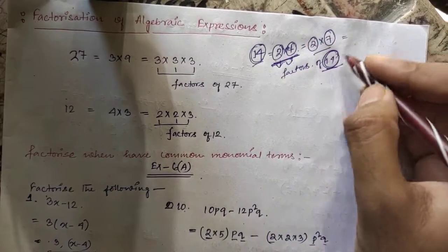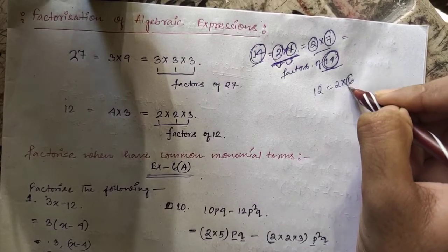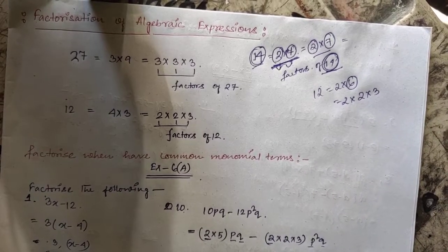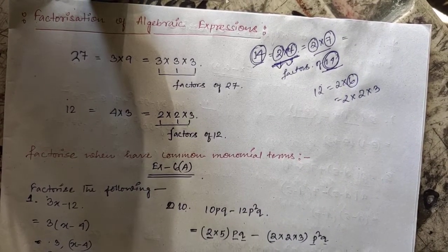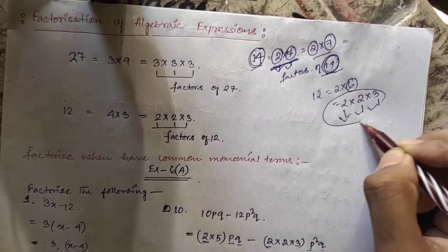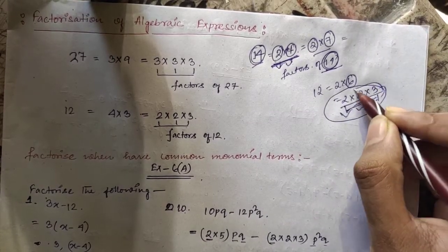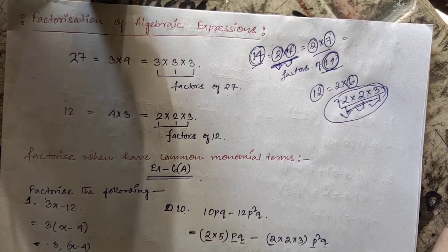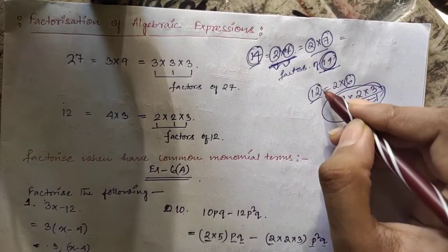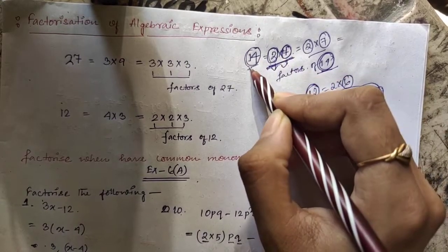Suppose 12 is given. We can write 12 as 2 × 6, and then simplify further: 2 × 2 × 3. So the factors of 12 are 2, 2, and 3. After this we cannot do any further simplification — these are the simplest form of 12. If you multiply all the factors together you get back the original number: for 14, multiplying all factors gives 14.